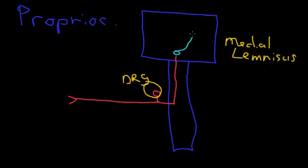That fiber then ends in the thalamus, exactly the same as the spinothalamic system. The third order neuron then heads to the sensory cortex.